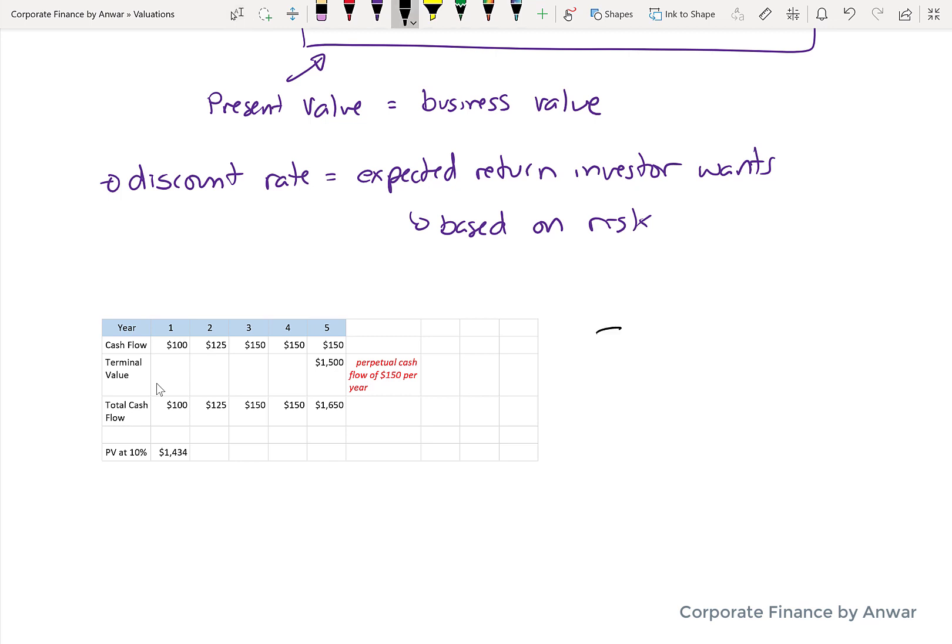So I've got the same cash flows: $100 first year, $125, then $150 thereafter. And I'm going to assume 10% as the discount rate.